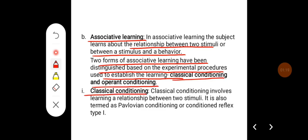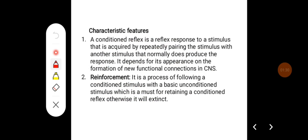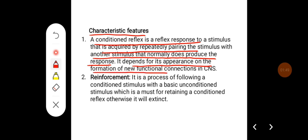Classical conditioning involves learning a relationship between two stimuli. It is also termed Pavlovian conditioning or conditioned reflex type 1. A conditioned reflex is a reflex response to a stimulus that is acquired by repeatedly pairing the stimulus with another stimulus that normally does produce the response. It depends for its appearance on the formation of new functional connections in the central nervous system.